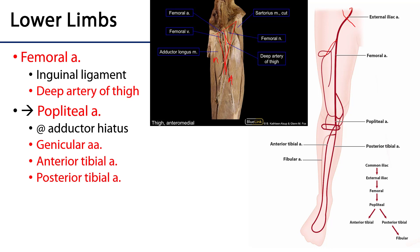Now that femoral artery is going to dive deep, going between the adductor group and quadriceps femoris, and it's going to cross over into the posterior portion of the thigh and exit through the adductor hiatus, where it becomes the popliteal artery.